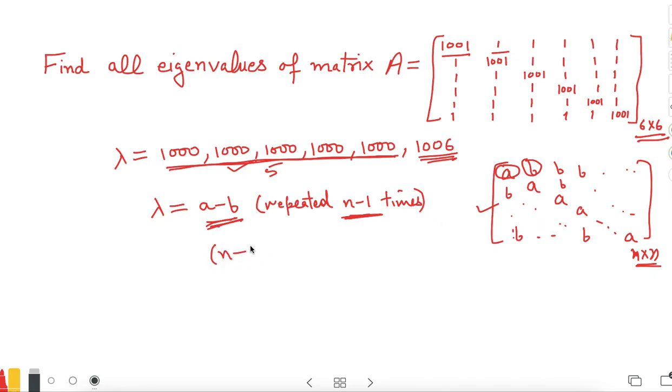And the remaining one eigenvalue is (n-1) times B plus A with algebraic multiplicity 1. That means this value occurs only once.